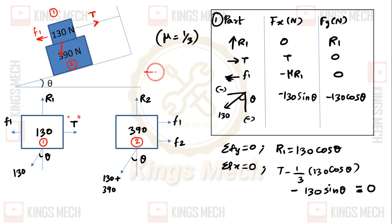The weight is 130N at angle theta. The reaction will always be in the opposite direction, that is R1. So now we have one, two, three, four unknown forces for block number one.